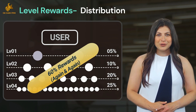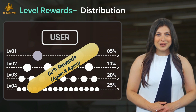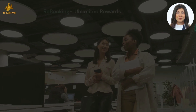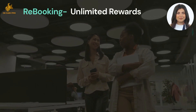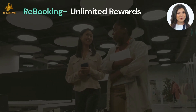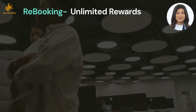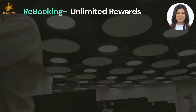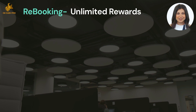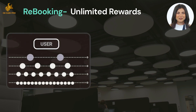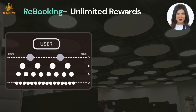The best part is that these 60% level rewards are distributed unlimited times without any additional investment — you get these rewards repeatedly through rebooking, for absolutely free. AuxCash Pro is the only system in the world where you invest once and earn for a lifetime. Your level rewards are 5% on level one, 10% on level two, 20% on level three, and 25% on level four — this is called Cycle One.